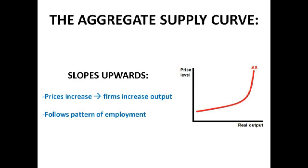Moving on now to the exciting world of aggregate supply. What you can see here is a Keynesian aggregate supply diagram. You may have been taught to do it separately — short-run aggregate supply and long-run aggregate supply — and we'll come on to those in a second. Basically, it slopes upwards because when prices rise, firms increase their output — there's more profit to be made. It also follows the pattern of employment: when there's lots of labour available, prices don't increase very much, but when the labour market tightens, wages rise dramatically as firms have to pay a lot to attract workers, causing a massive rise in costs of production. So the price level rises quite dramatically, and when it gets almost vertical, the economy has reached full employment, so output cannot change without things like immigration.